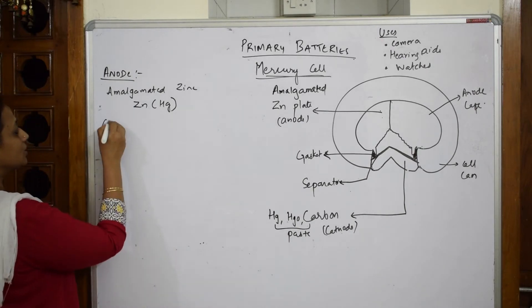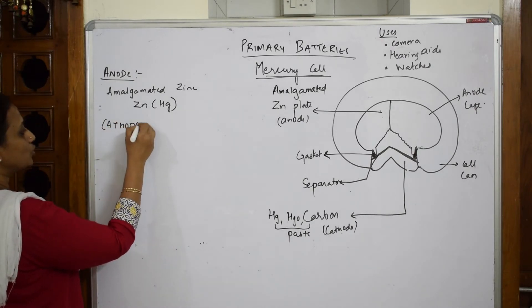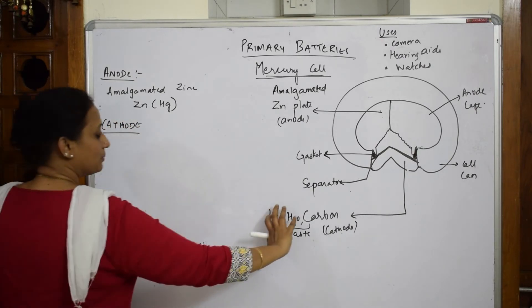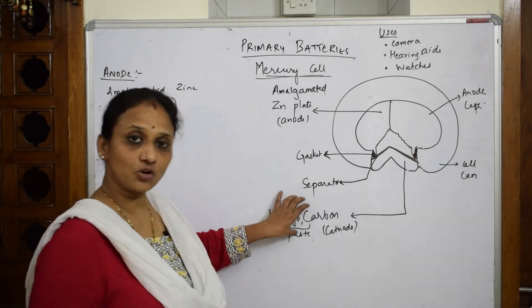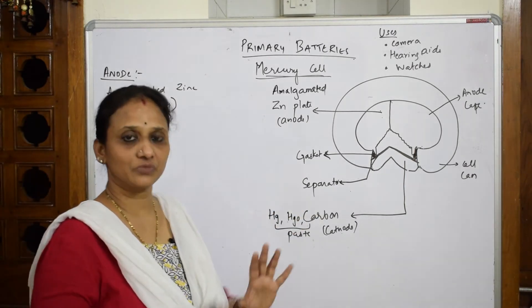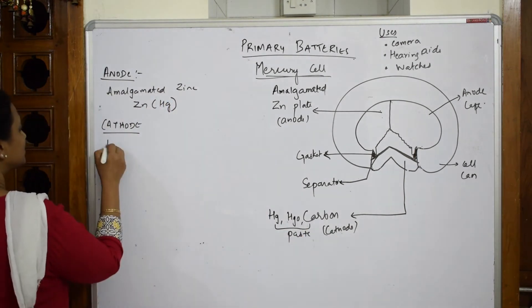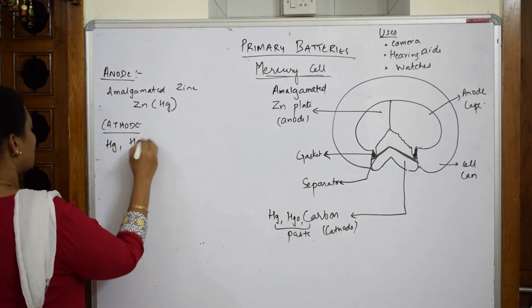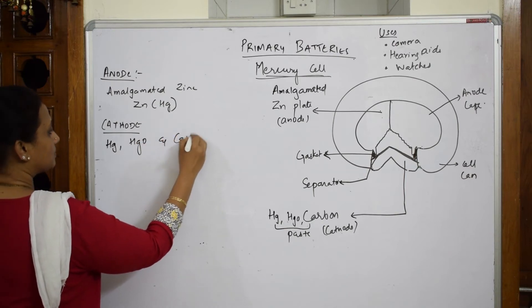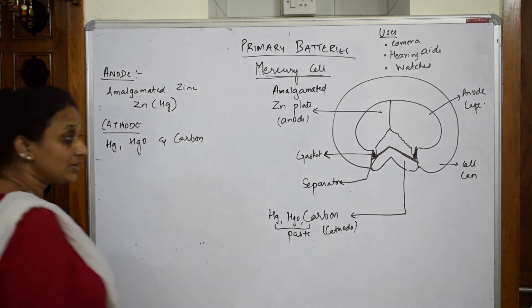Next comes the cathode. Your cathode is made up of two important things - a paste of mercury oxide as well as carbon. Mercury oxide and carbon together, made as a paste, acts as a cathode.